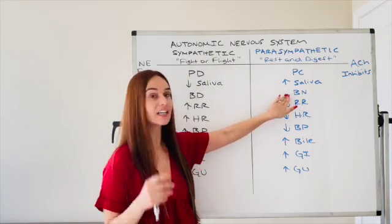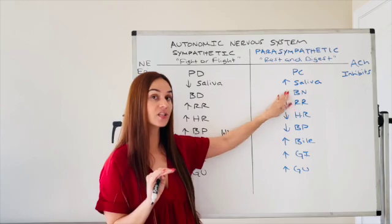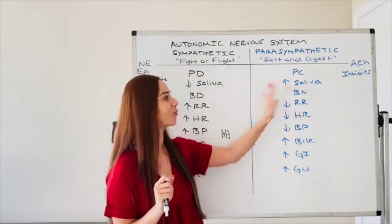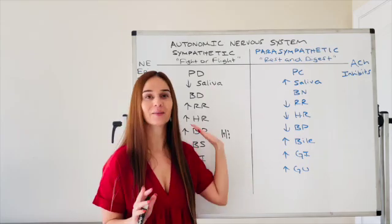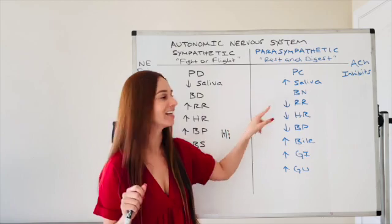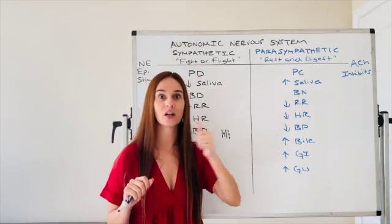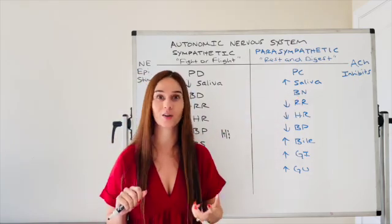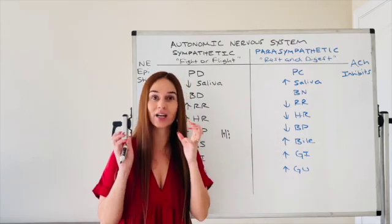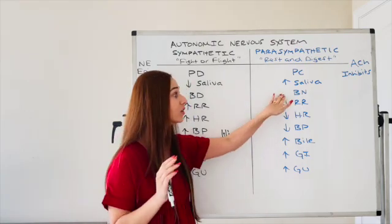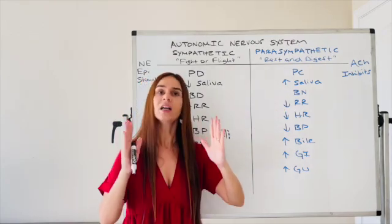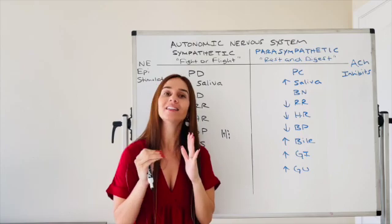And instead of BC for bronchial constriction, I put bronchial narrowing because when I first created this chart years ago, I mean, I've been using this chart for easily over a decade. I put BC and my students were like, oh shoot, bronchoconstriction. They're having a bronchospasm. No, in rest and digest, you're not having like a bronchospasm or bronchoconstriction, but your airways, this BN stands for bronchial narrowing.